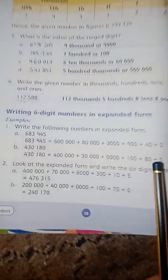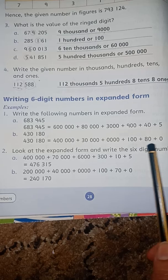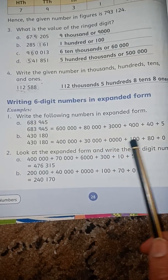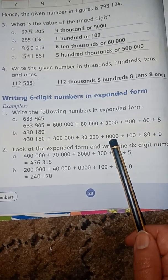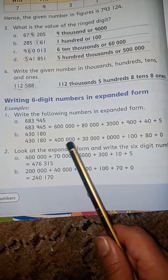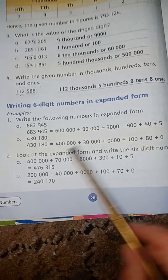Now, do we need to write the zeros in the expanded form or not? If there are zeros, no, we don't need to write them.